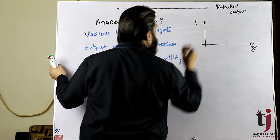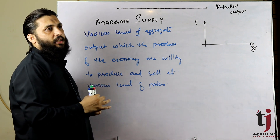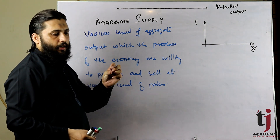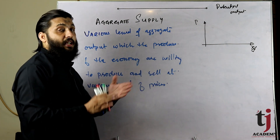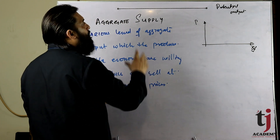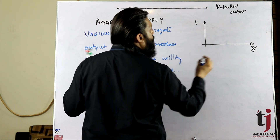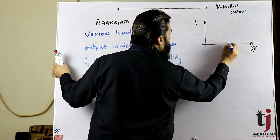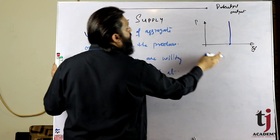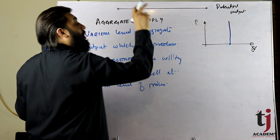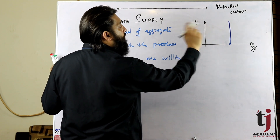Output और price को लेकर हमने quantity theory of money discuss की, जिसमें classicals कहते थे कि price level चेंज होता है money supply के बढ़ाने या कम करने से — output से price level पर कोई फर्क नहीं पड़ता। इसी वजह से classicals हमेशा full employment पर produce करते थे, इसलिए इनका output हमेशा एक ही रहता था। इसी वजह से इनका aggregate supply curve vertical बनेगा — price कितना भी ज्यादा या कम हो, output वही रहेगा।